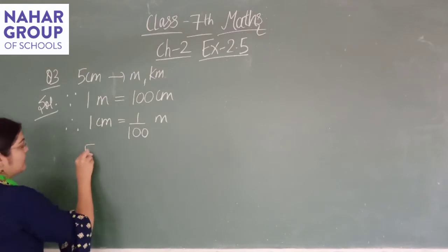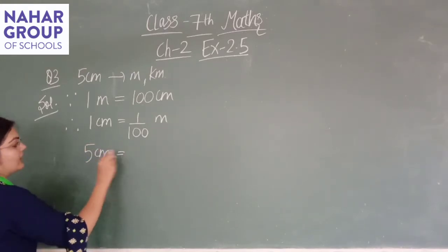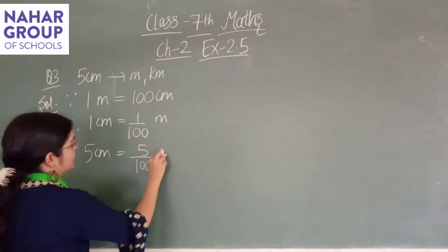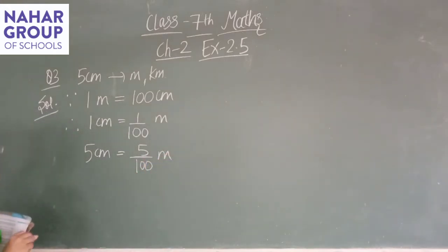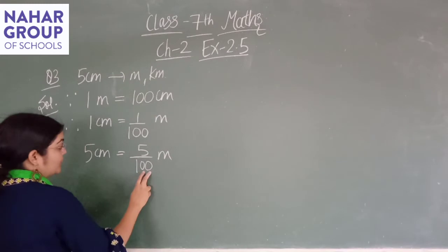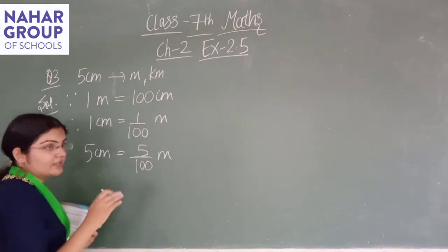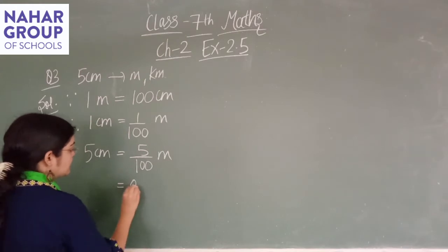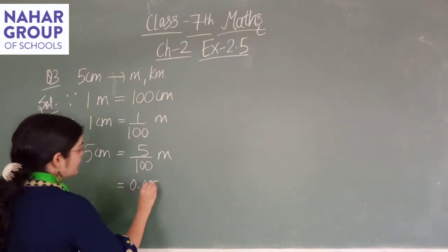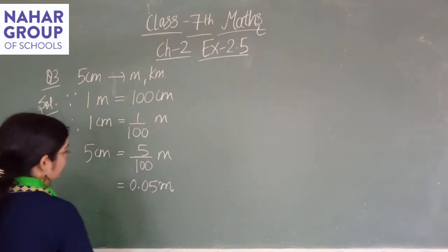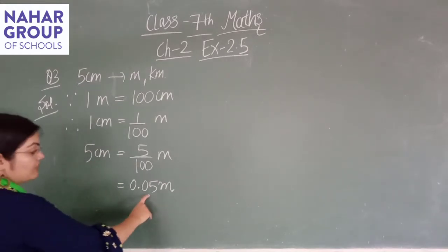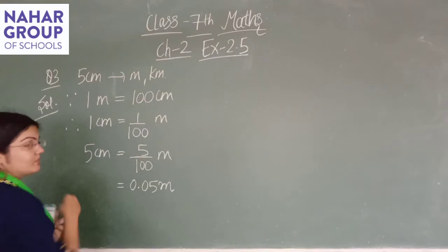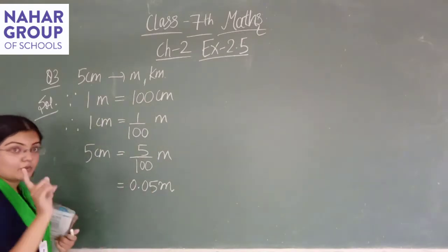अब कितना cm रखा है? 5 cm। तो क्या करेंगे? 5 upon 100 meter। Now 5 upon 100 — 2 zeros हैं, it means point के बाद 2 digits चाहिए, so it means 0.05 meter। यह 5 cm का meter में conversion हुआ — यह एक portion complete।